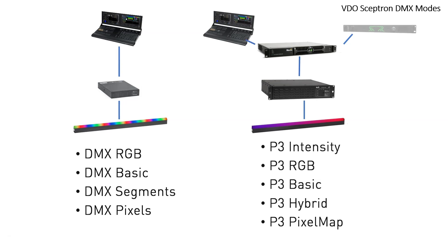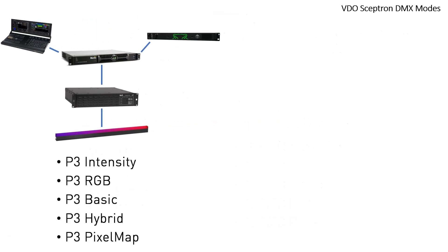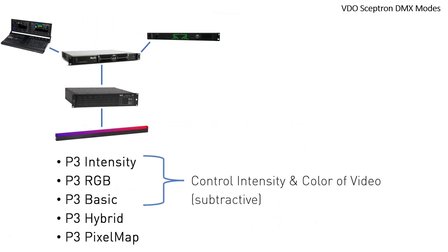Let's have a closer look at these modes. The first three modes are subtractive modes, for which it is mandatory to have a media server connected to the P3 system controller. By DMX you can remove intensity and/or colors from the video on a fixture by fixture basis via the lighting desk.